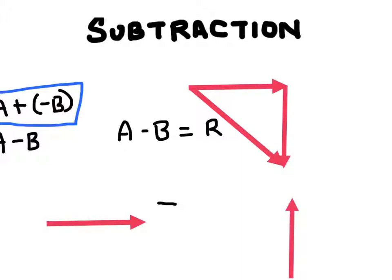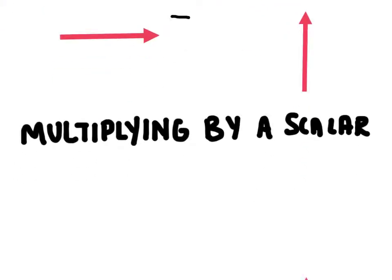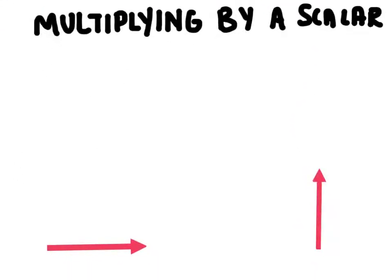And finally, we can actually multiply our vectors by a scalar. So let's try this one. Let's try a plus 2b and see what that comes out to. So here's our vector a.